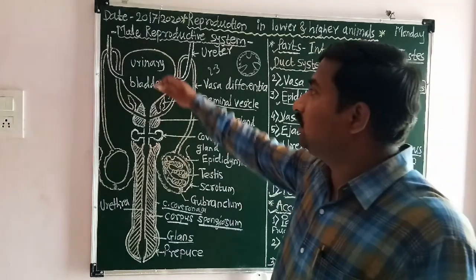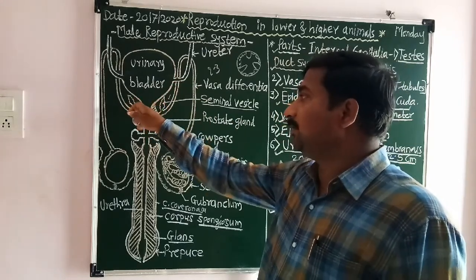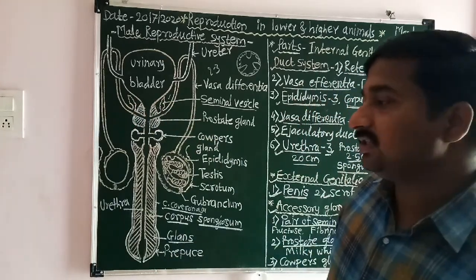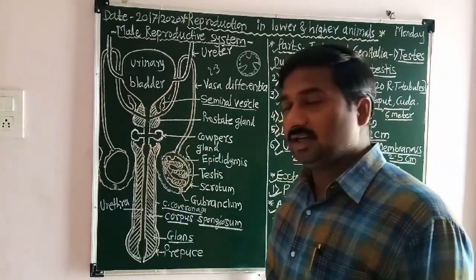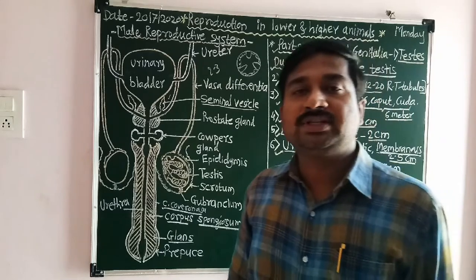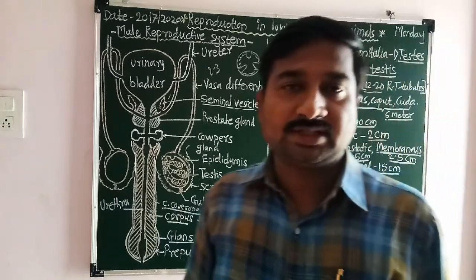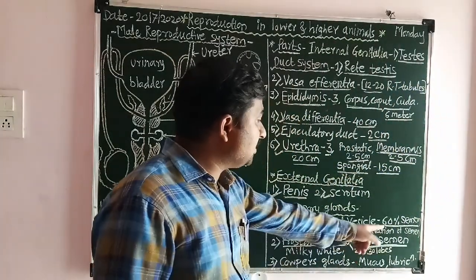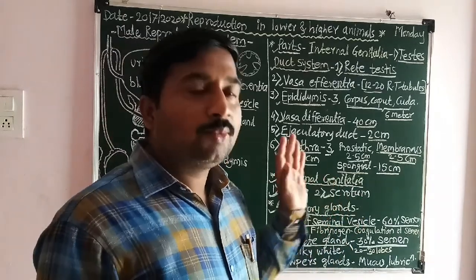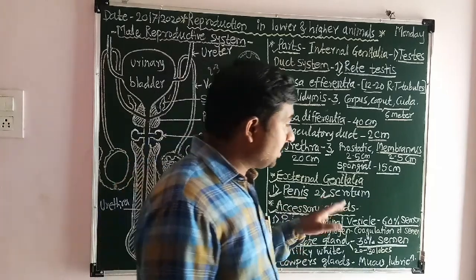The seminal vesicles are present below the urinary bladder. They are looking like a lip-shaped structure and they secrete an alkaline viscous fluid called seminal fluid, which forms about sixty percent of the semen. This fluid contains different types of components like fructose, fibrinogen, and prostaglandins.